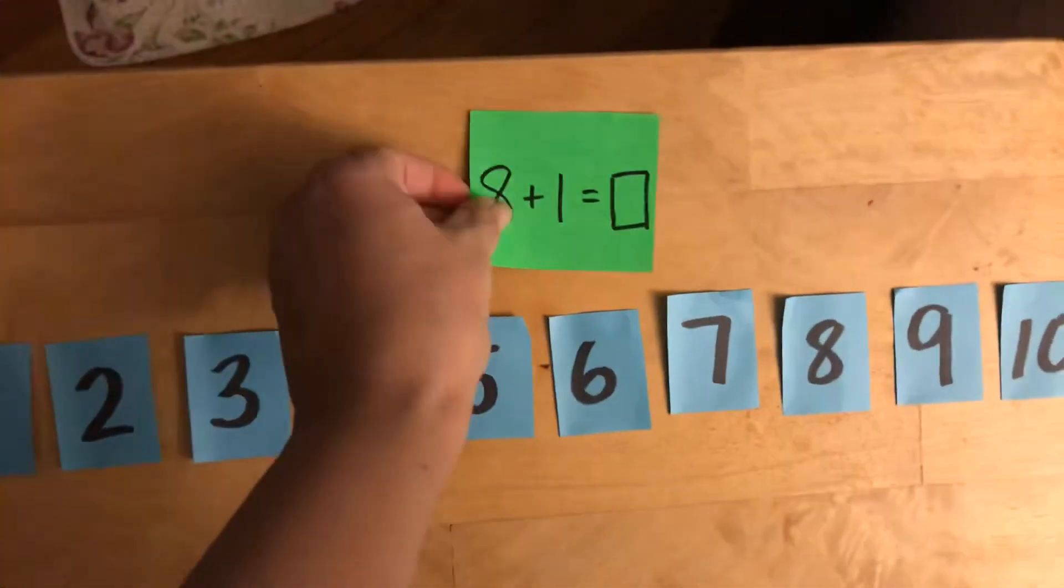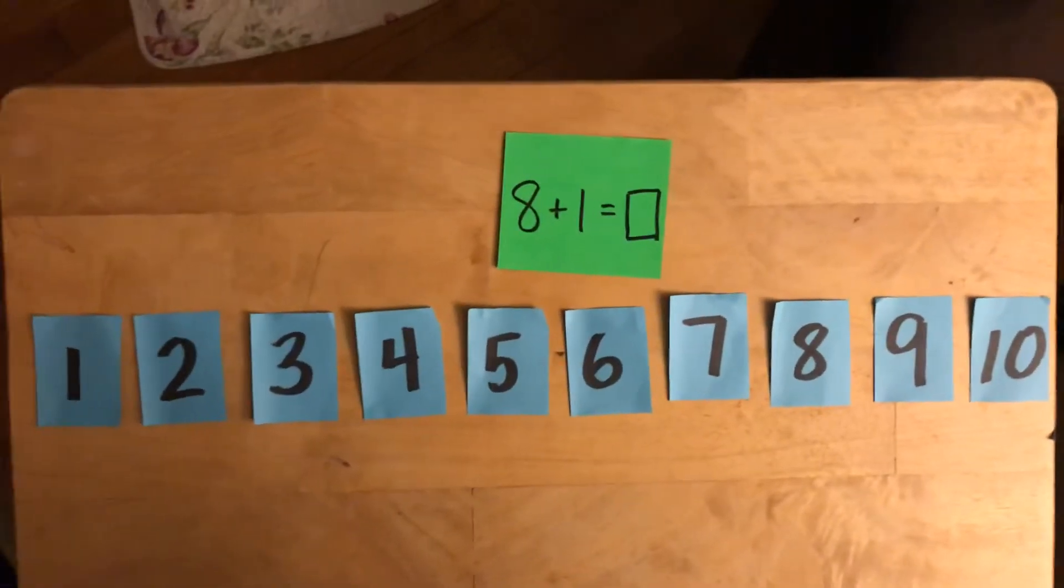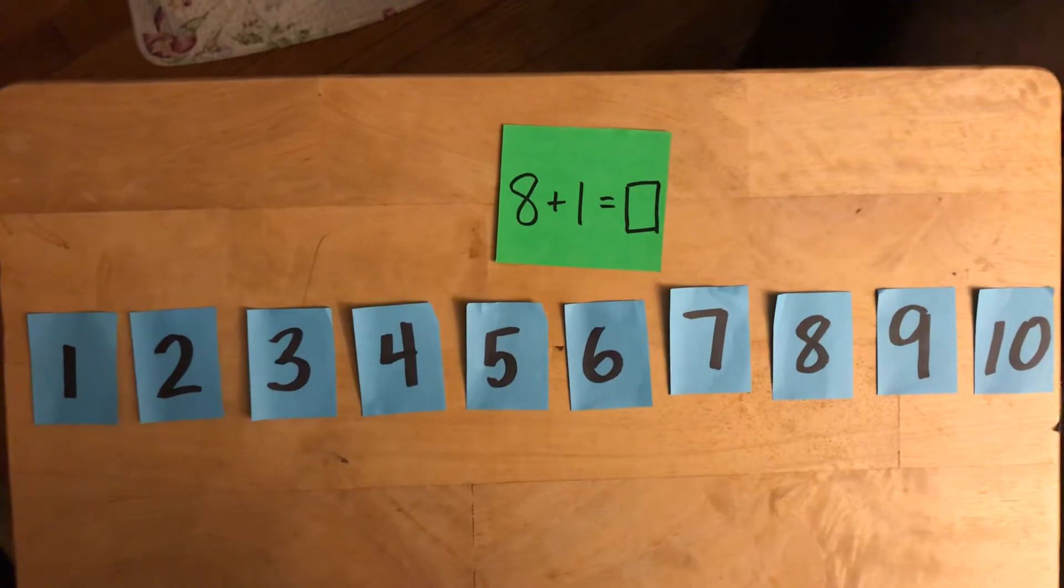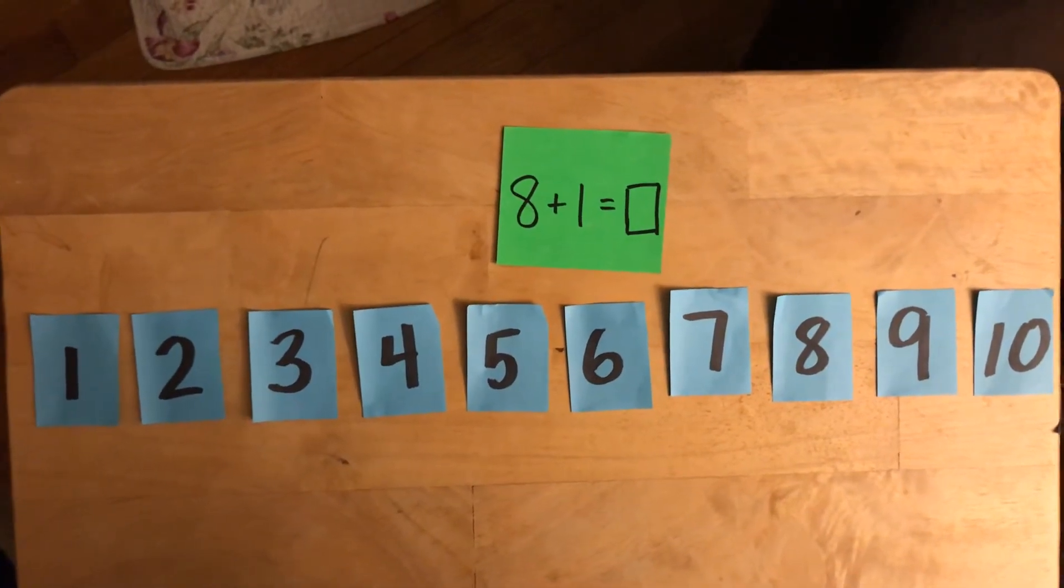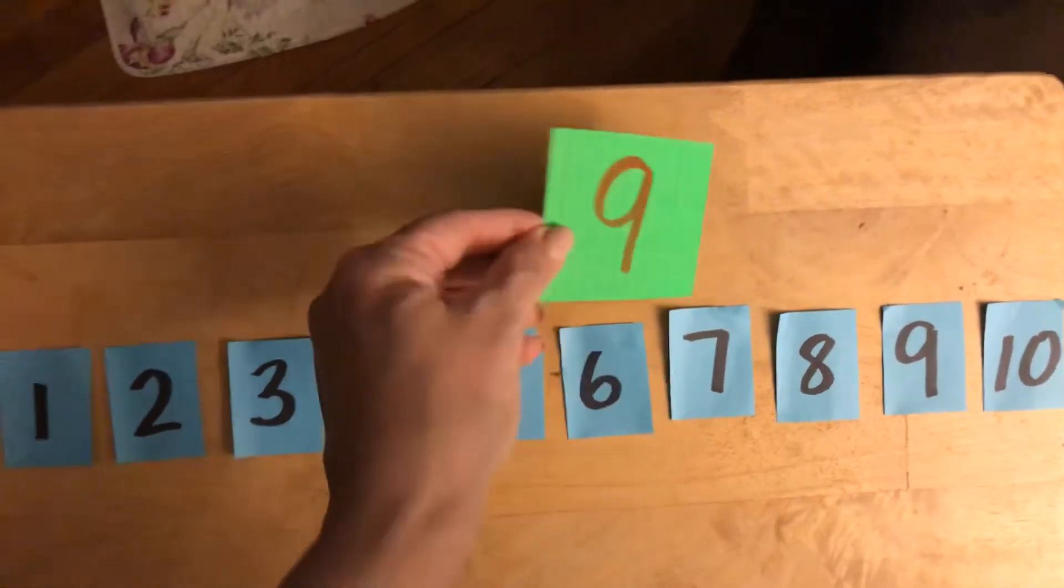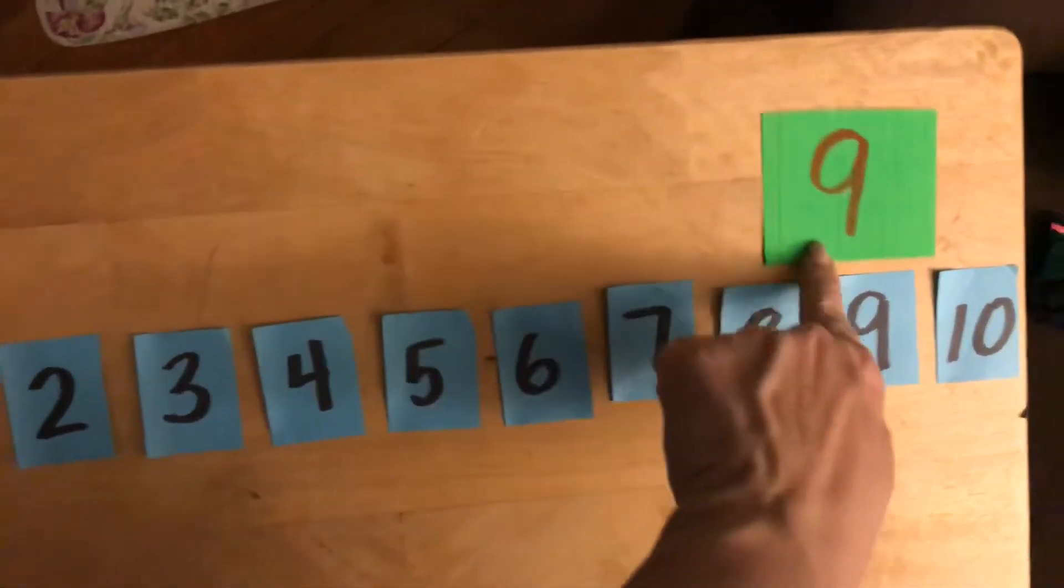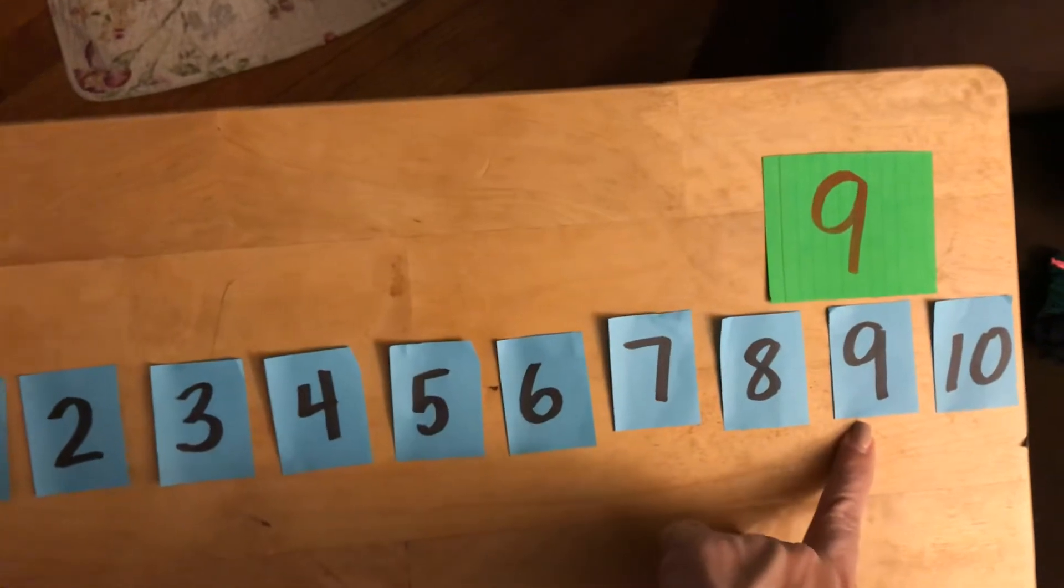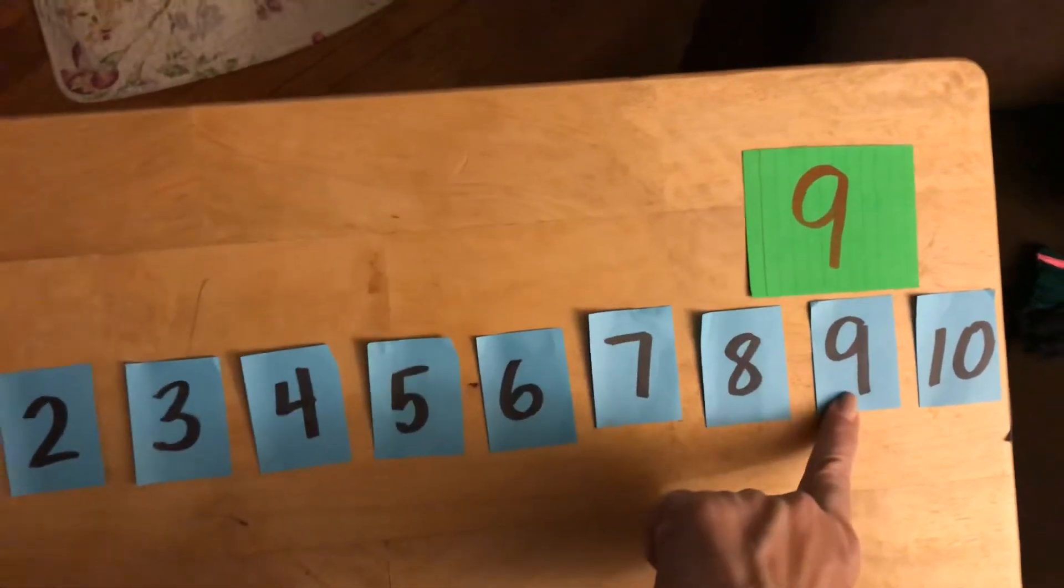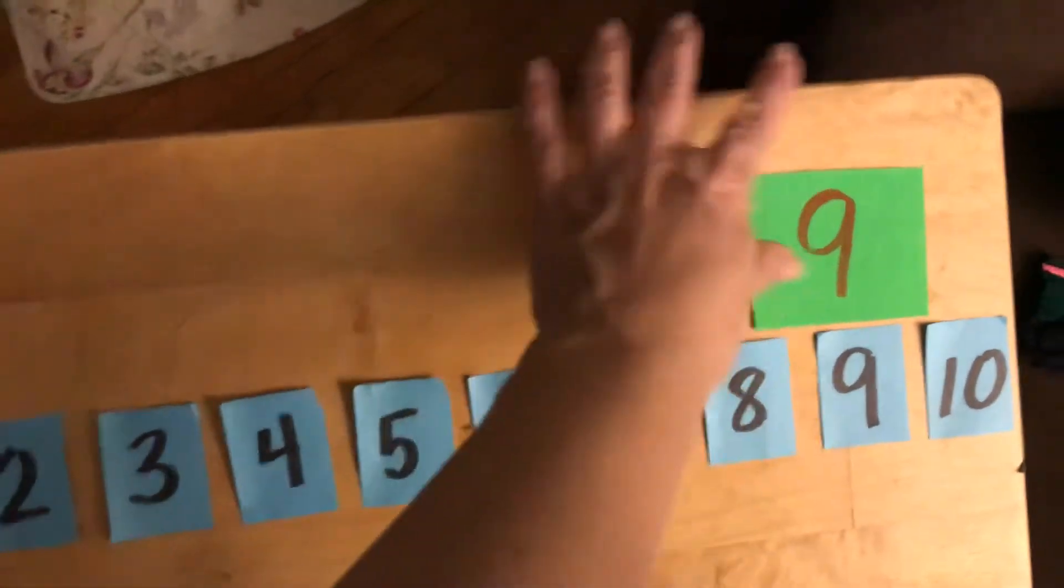All right, here's the next one. You give that a try. Let's see what number is the whole amount. 9. I hope that's where you were. It was 8 plus 1. Just one more. 9. I know you got it.